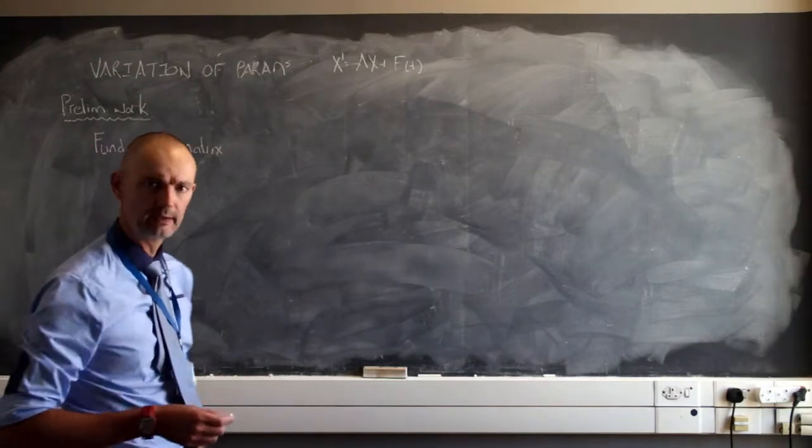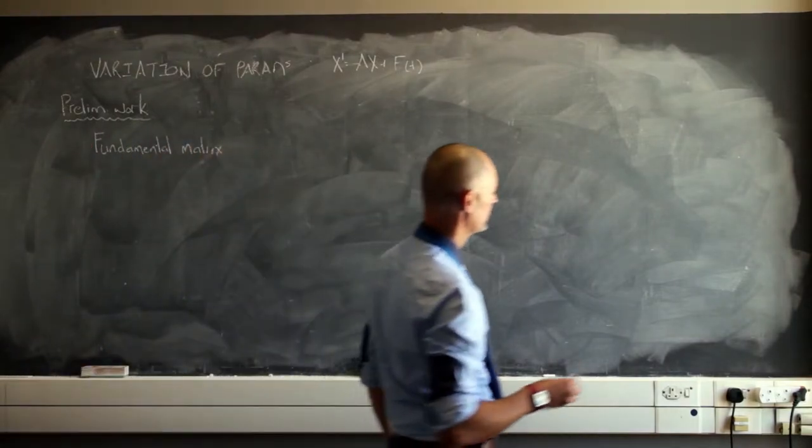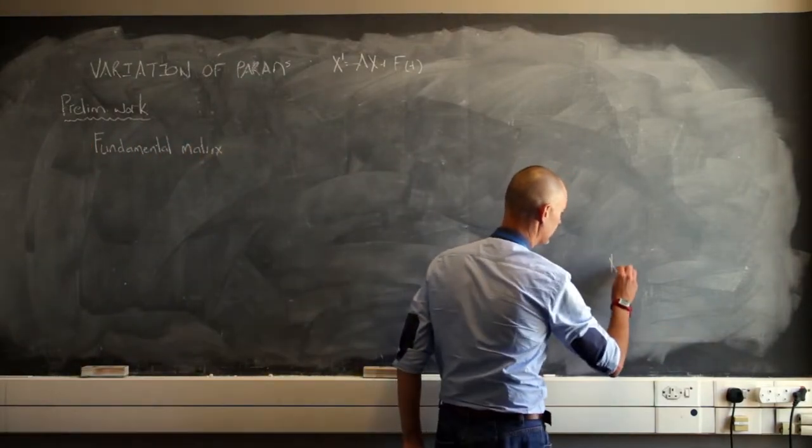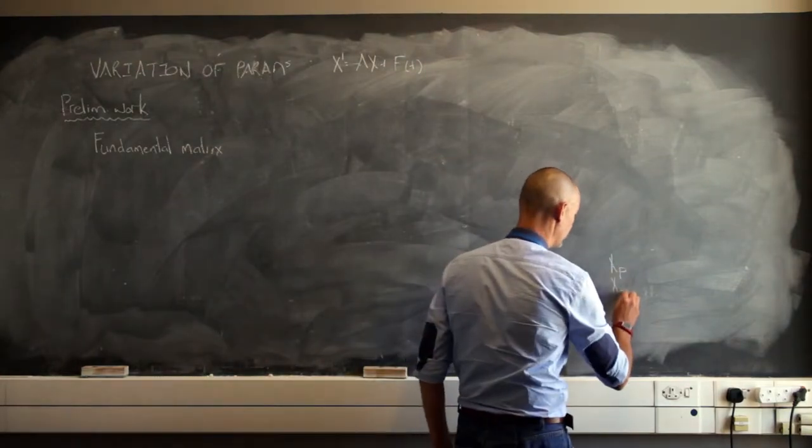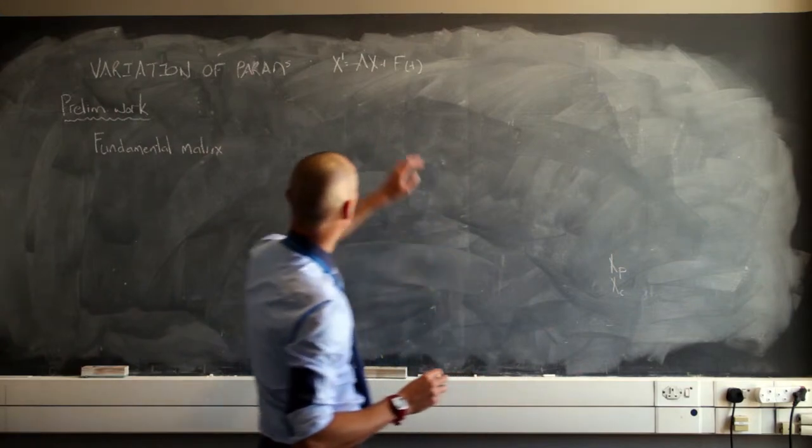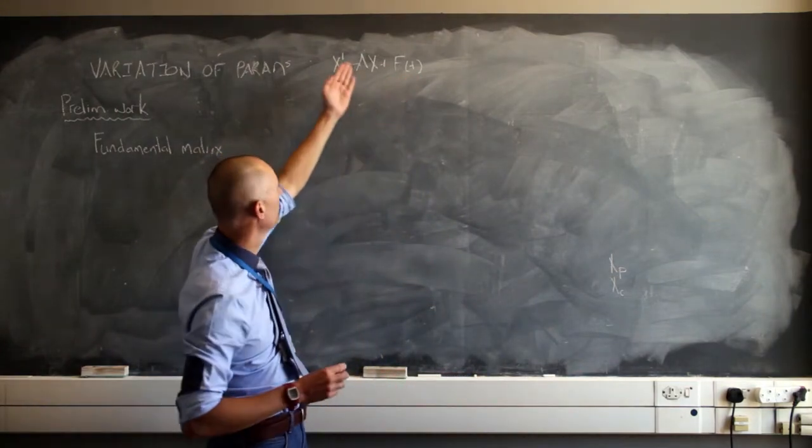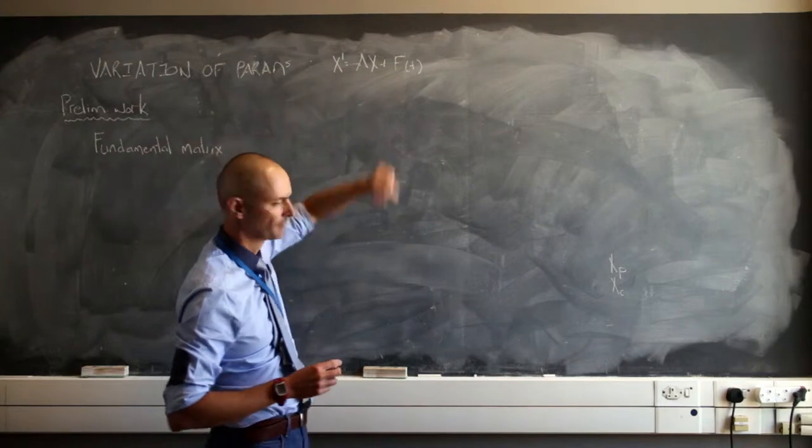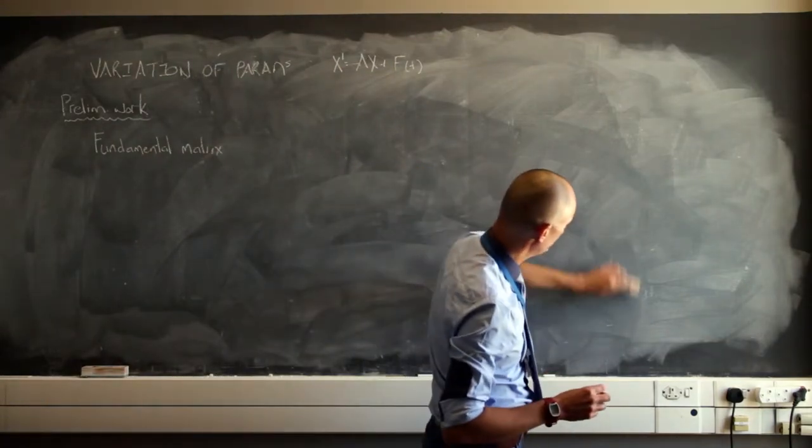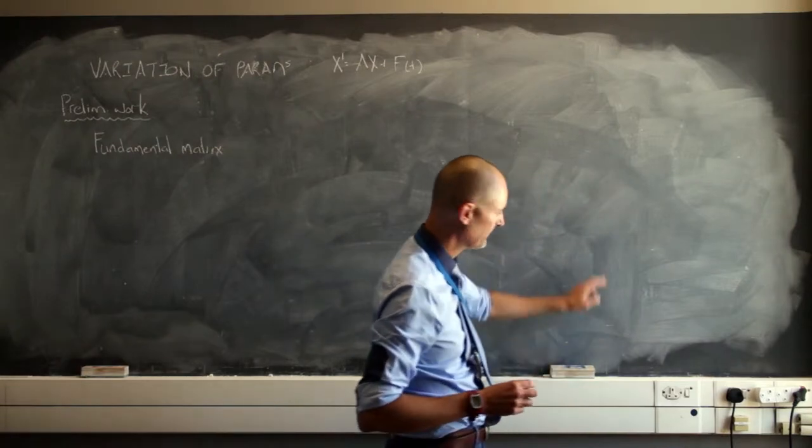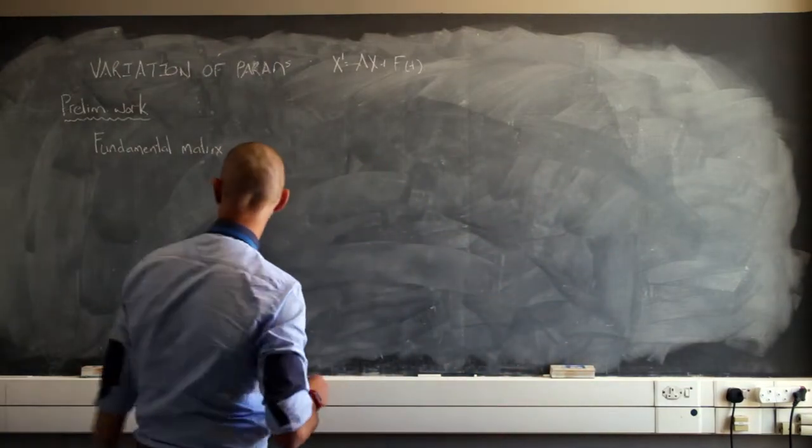Now we need some preliminary work. What we are trying to get at is this particular solution. We know how to get the complementary solution set where we would just set f of t equal to zero. We know how to solve x prime equals ax.